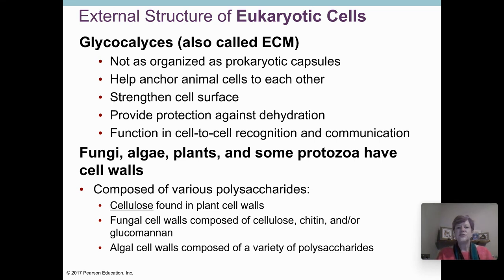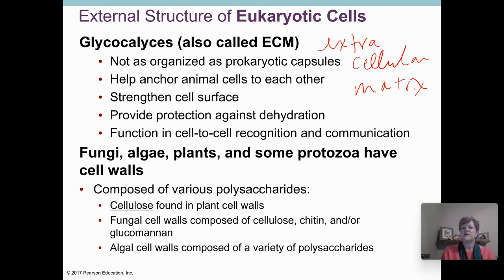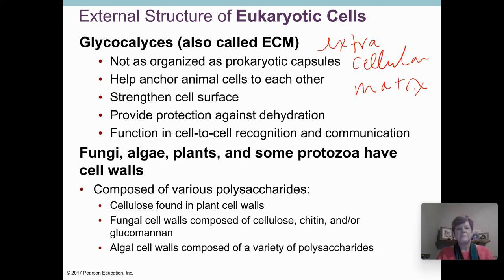Eukaryotic cells have a glycocalyx — we typically call it the extracellular matrix, so you might have learned it under that name. Extracellular means something outside the cell. The glycocalyx in eukaryotic cells has a lot of different functions: attaching cells together, strengthening the cells, and functioning in cell-to-cell recognition.